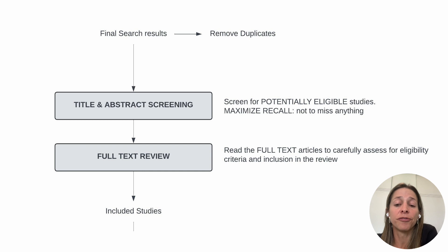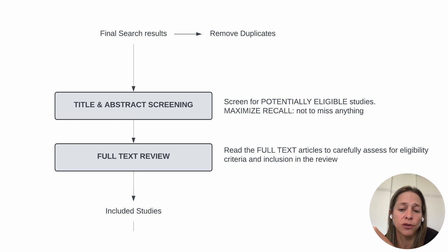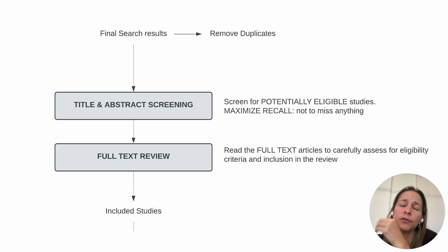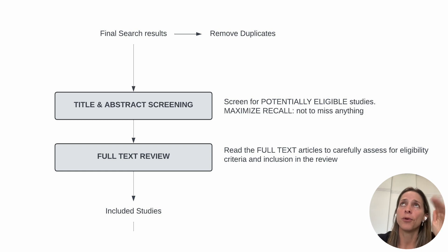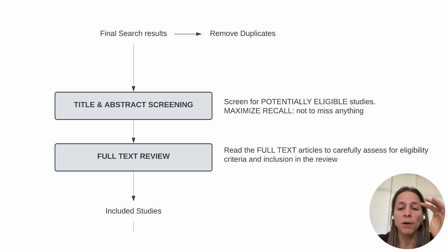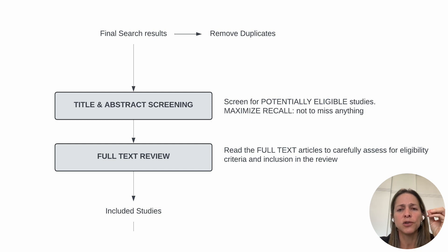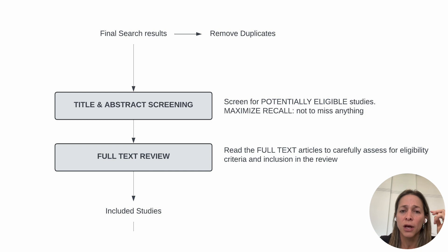You finally have your list of search results with a number of studies from each database — for example, 3,000 from Medline and 4,000 from Embase. Many of them are going to be duplicates, so they need to be removed. This is usually done automatically in reference citation managers or systematic review software.